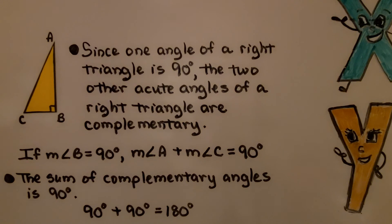The sum of complementary angles is 90 degrees, and 90 degrees plus 90 degrees equals 180 degrees, the interior measures of a triangle.